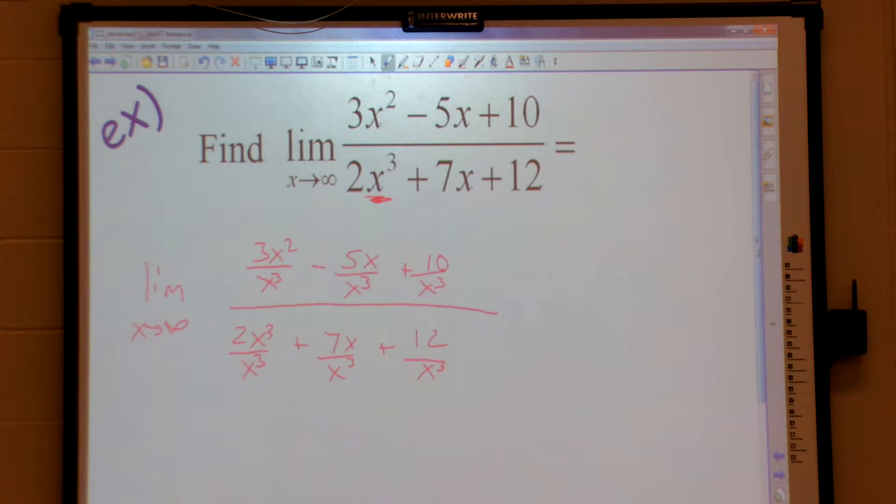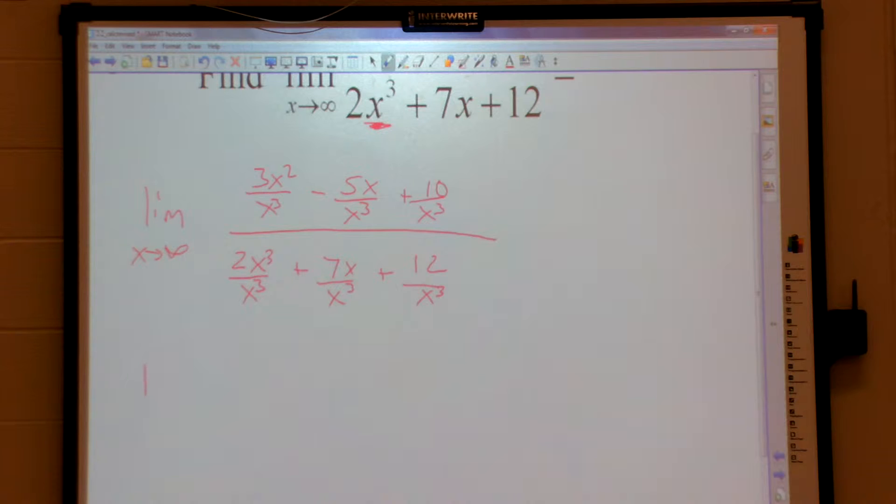Now let's clean that up, because some things cancel, correct? The limit of x goes to infinity, that one will be 3 over x. Minus 5 over x squared. 10 over x cubed. On the bottom, those will cancel, I'll get 2, plus 7 over x squared, plus 12 over x cubed.